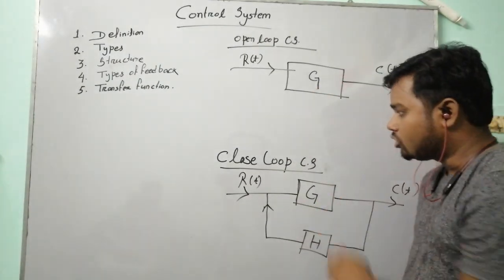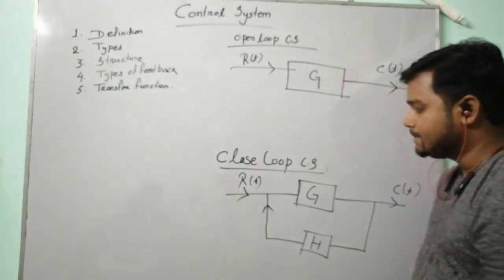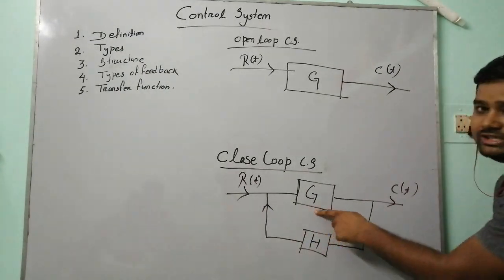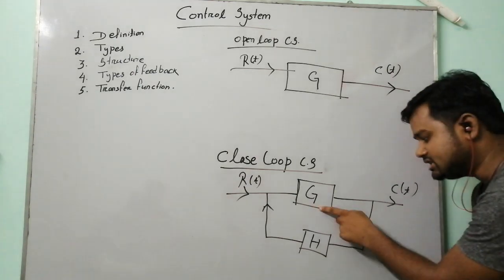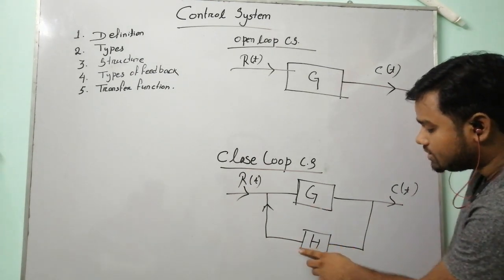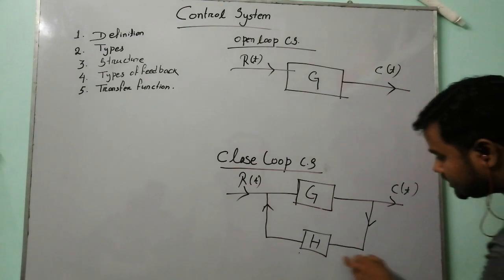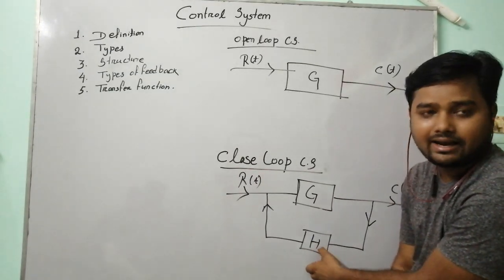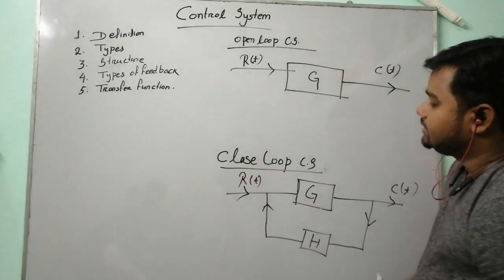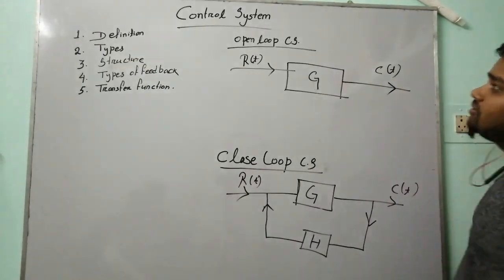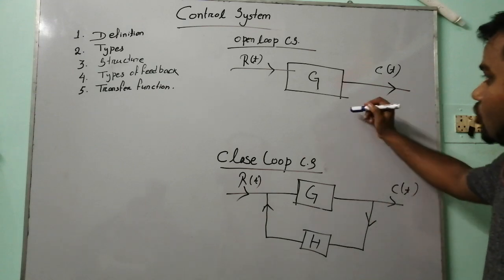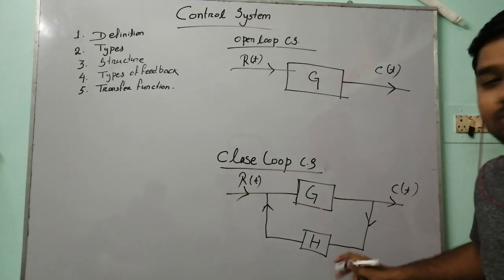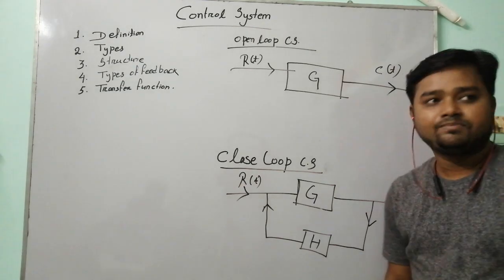Next we look at the closed loop control system. Here the input is r(t), the output is c(t), and the gain is G. There is always a feedback path: from the output side, a path comes towards the input, and this feedback path is denoted by capital H. The only difference between open loop and closed loop is that the closed loop has a feedback path H.